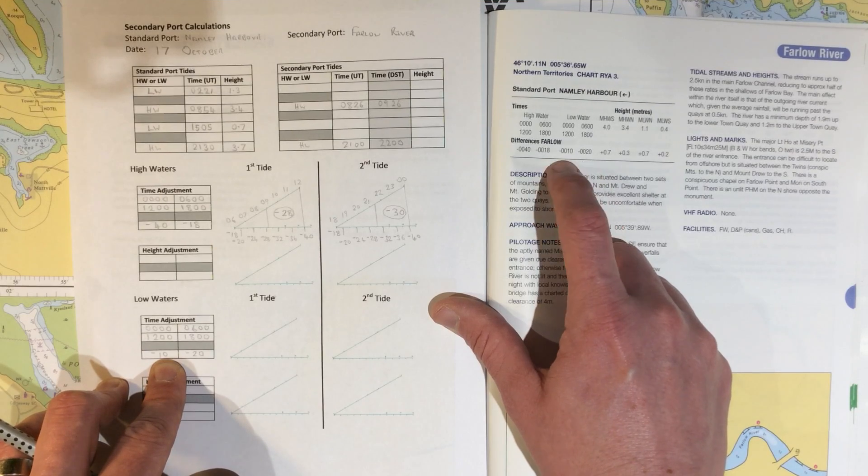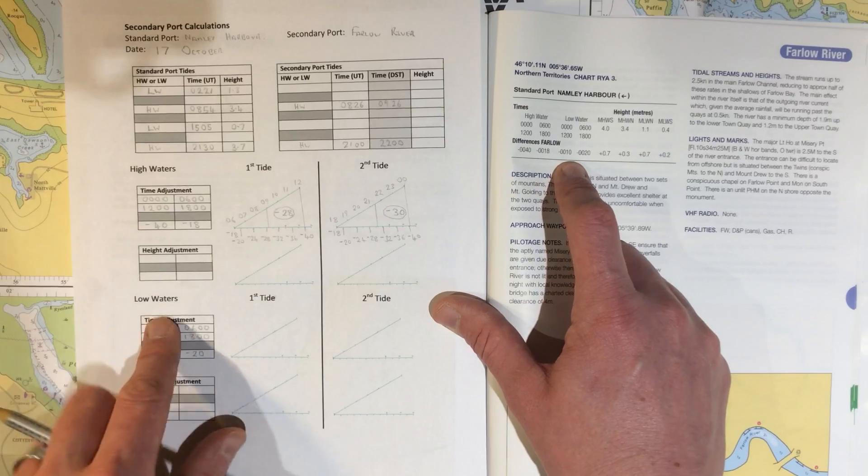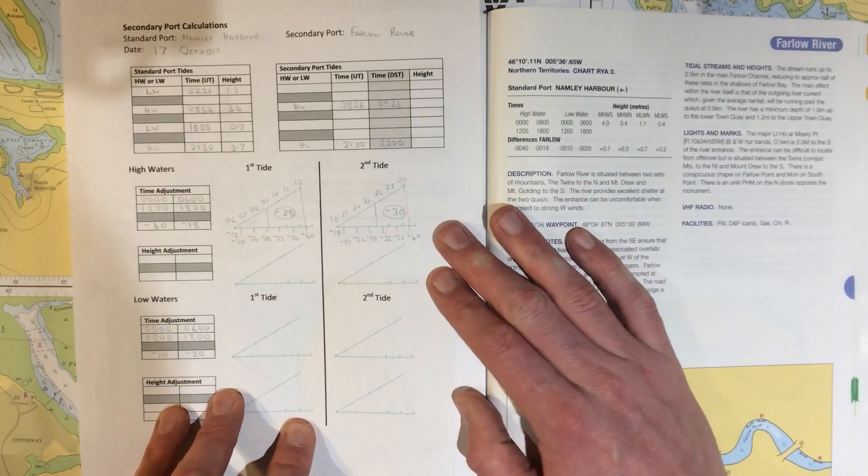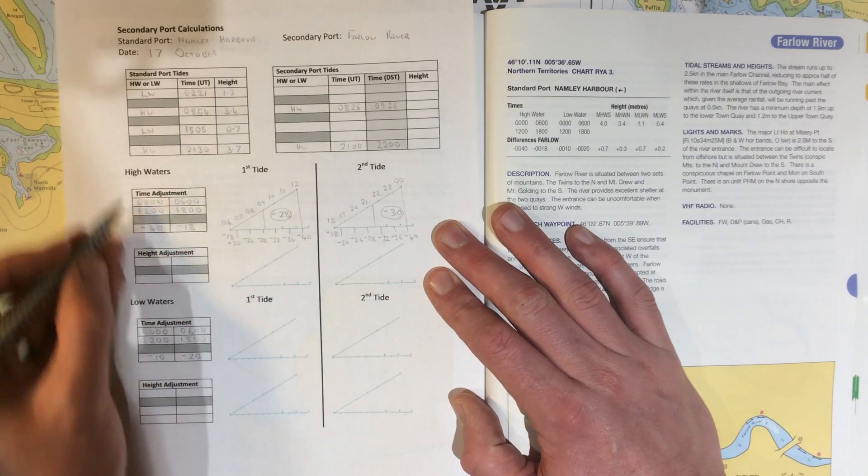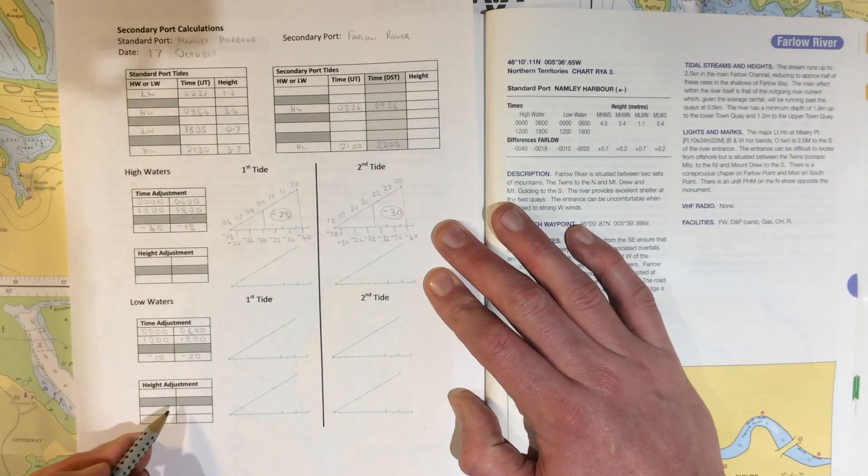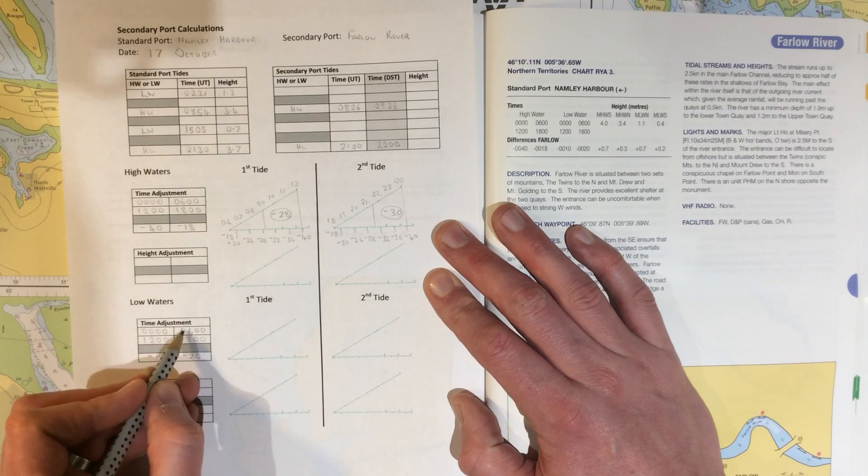We've copied this information over here. We can now just do our calculations on this sheet. The first thing to see is that our first low water of the day was at 2 in the morning, or just after 2 in the morning. So that is between midnight and 6 in the morning.